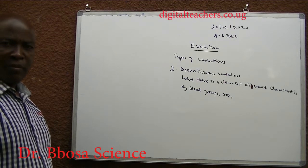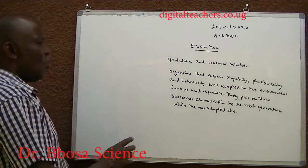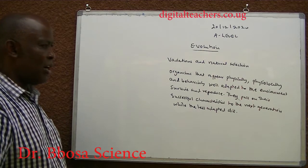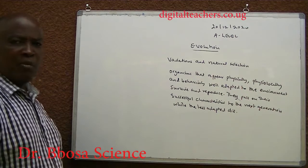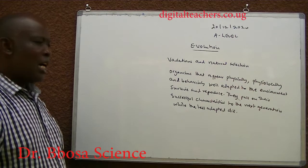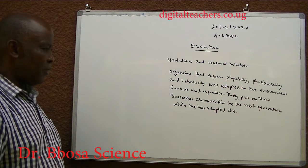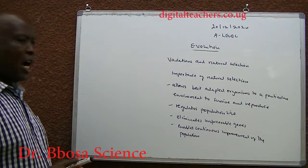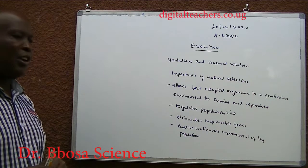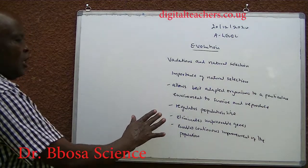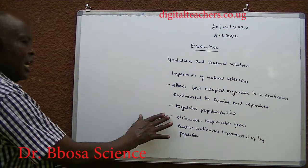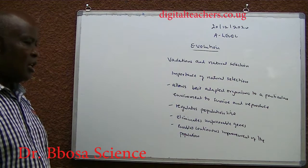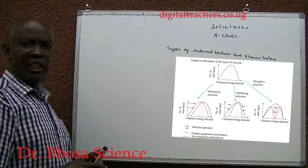Variations and natural selection: organisms that are physically, physiologically, and behaviorally well adapted to the environment survive and reproduce. They pass on their successful characteristics to the next generation, while the less adapted die. Importance of natural selection: allows the best adapted organism to survive and reproduce, regulates population size, eliminates unfavorable genes, and enables continuous improvement of the population.